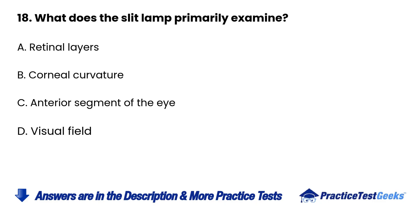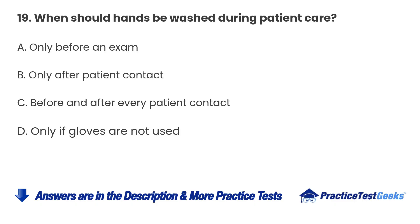18. What does the slit lamp primarily examine? A. Retinal layers B. Corneal curvature C. Anterior segment of the eye D. Visual field